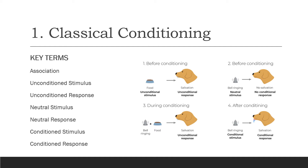In the instance of Pavlov, he was trying to get a dog to associate two items together. Before conditioning, the unconditioned stimulus of dog food gained the unconditioned response of salivation from a dog. Also before conditioning, the neutral stimulus of a bell gained a neutral response of no salivation. During conditioning, the bell would be rung at the same time as the food being given to the dog — so the neutral stimulus of a bell alongside the unconditioned stimulus of food, still gaining the unconditioned response of salivation.